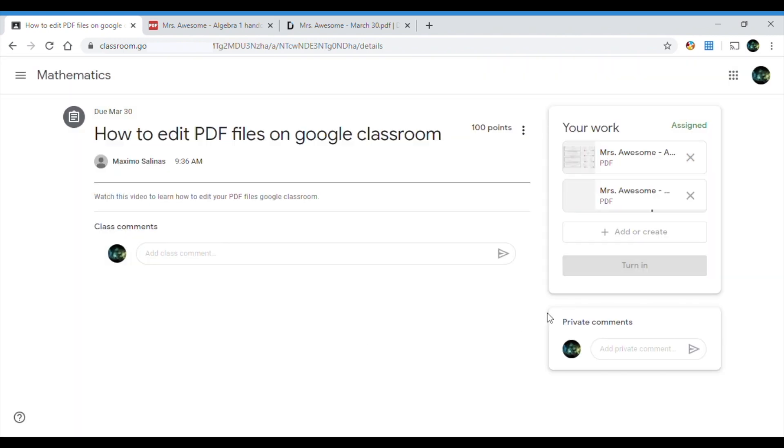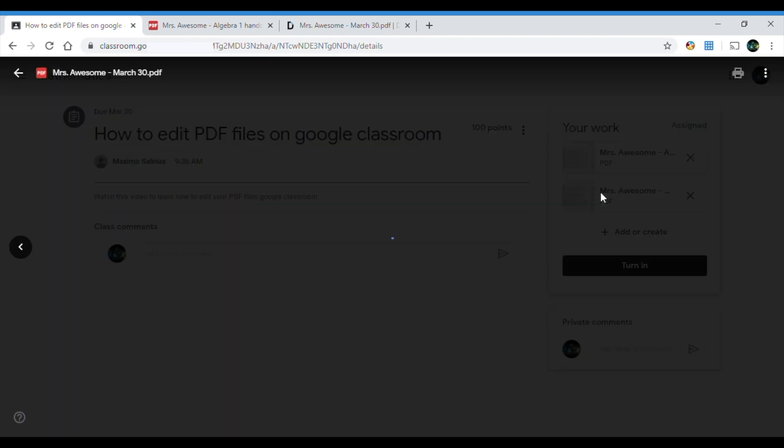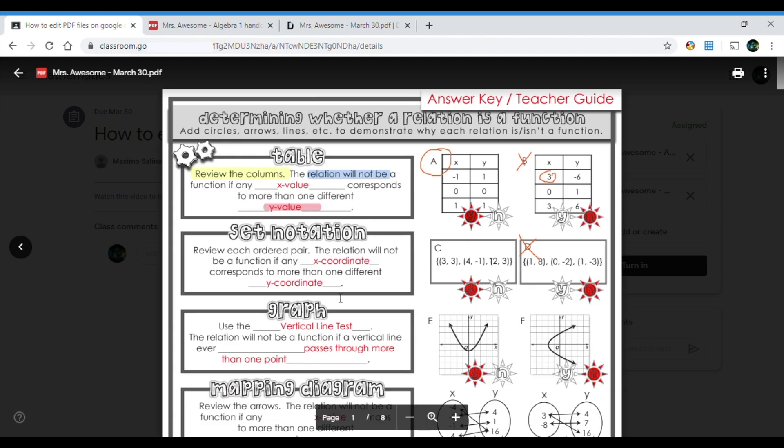Notice how here it says Mrs. Awesome, Algebra 1 handout. But when I put my cursor here, it says Mrs. Awesome, March the 30th. This is the one I'm going to submit. So I want to click on it. As you can see my work is saved. Ta-da! To close it, click on the back arrow.